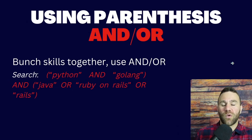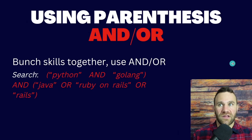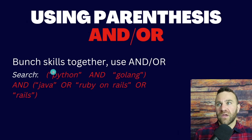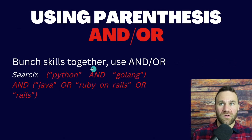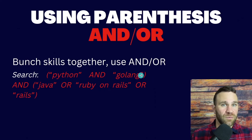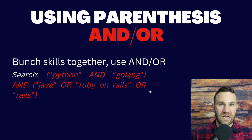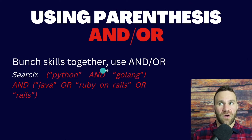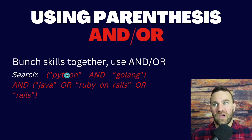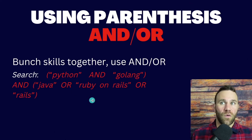A similar example is using AND in the first set of parentheses. So the parentheses would say Python AND Golang — meaning I want a candidate that has absolutely both of these, no questions asked — and one of these skills from the second set of parentheses, such as Java, Ruby on Rails, OR RAIL. So every candidate that populates will have Python and Golang and one of those keywords in their profile.